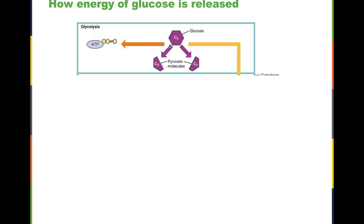Starting with a bigger molecule and breaking it down into smaller pieces, some energy is released, which the cell harvests to make ATP.